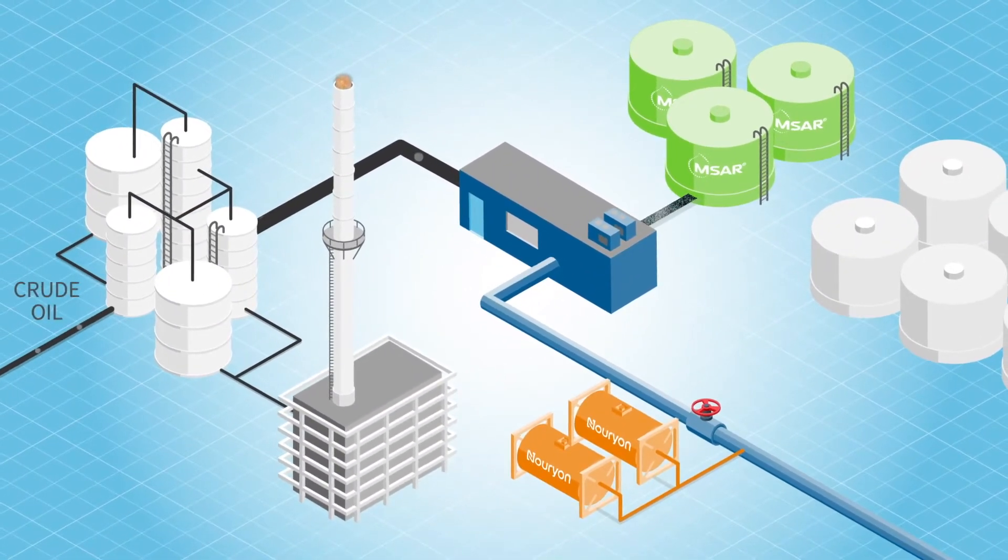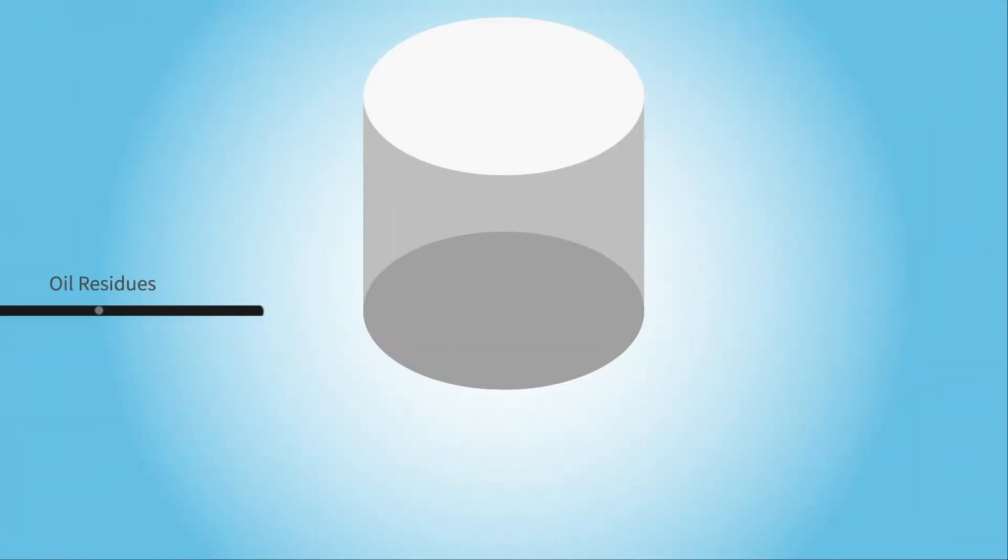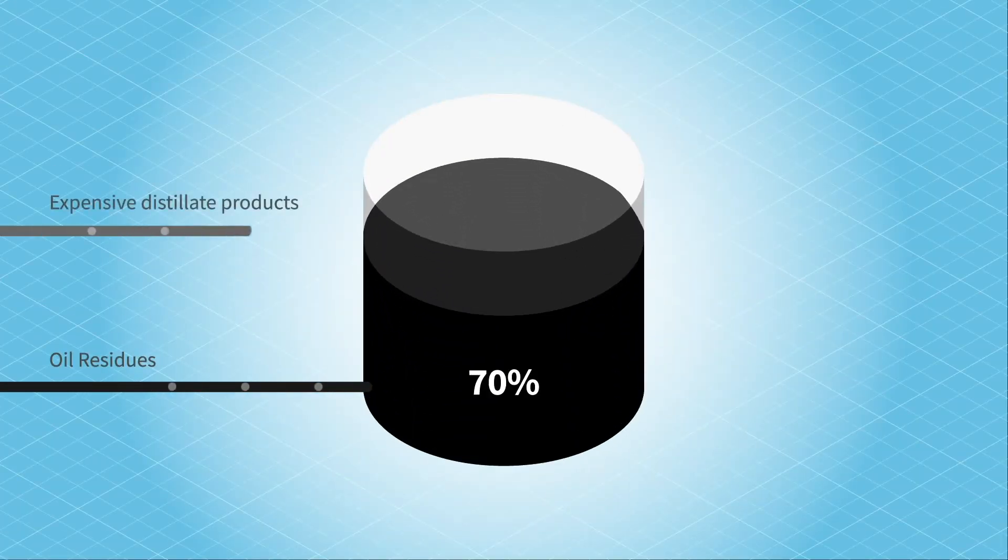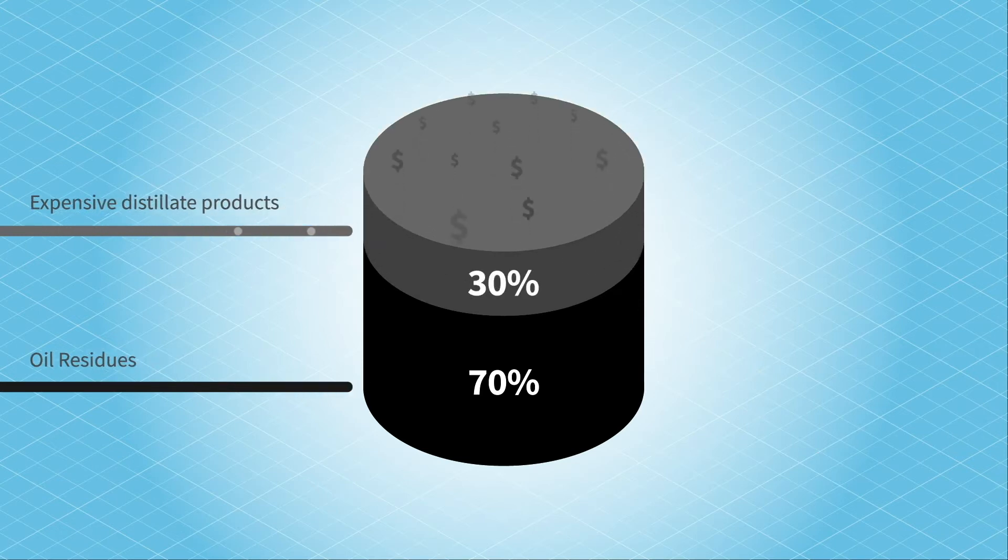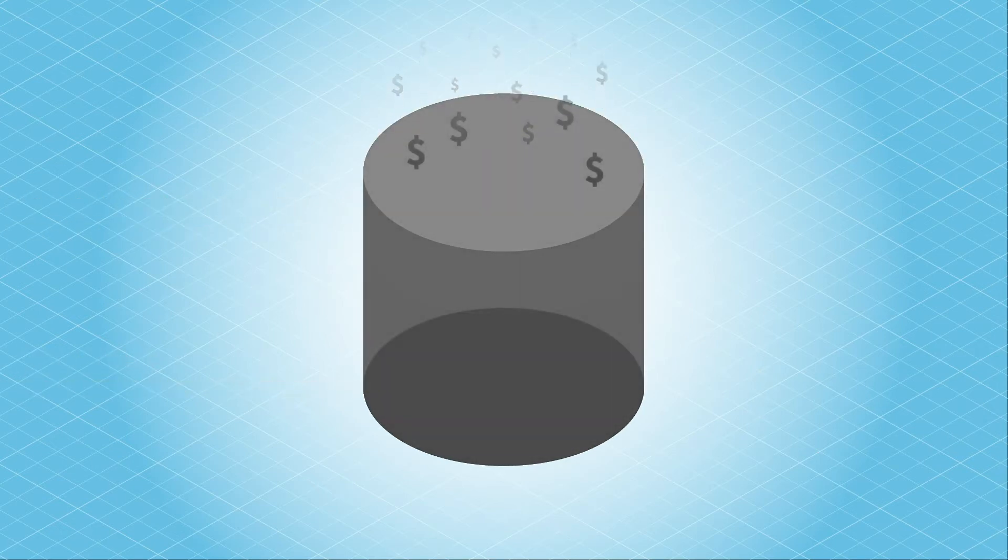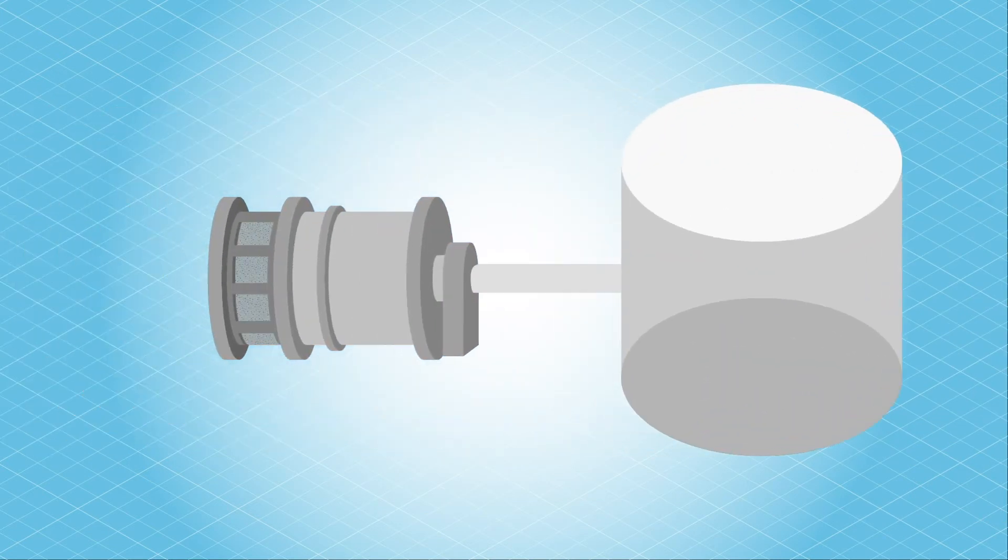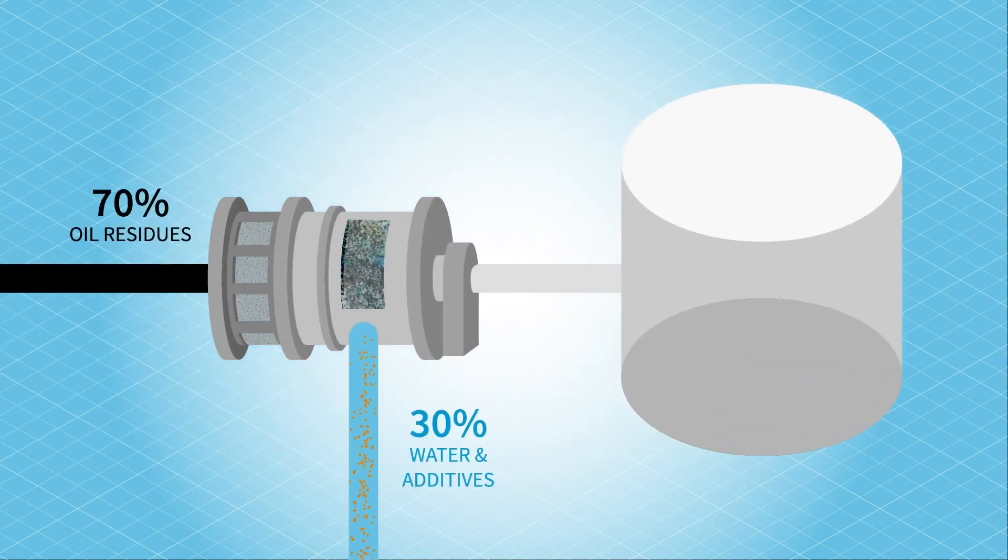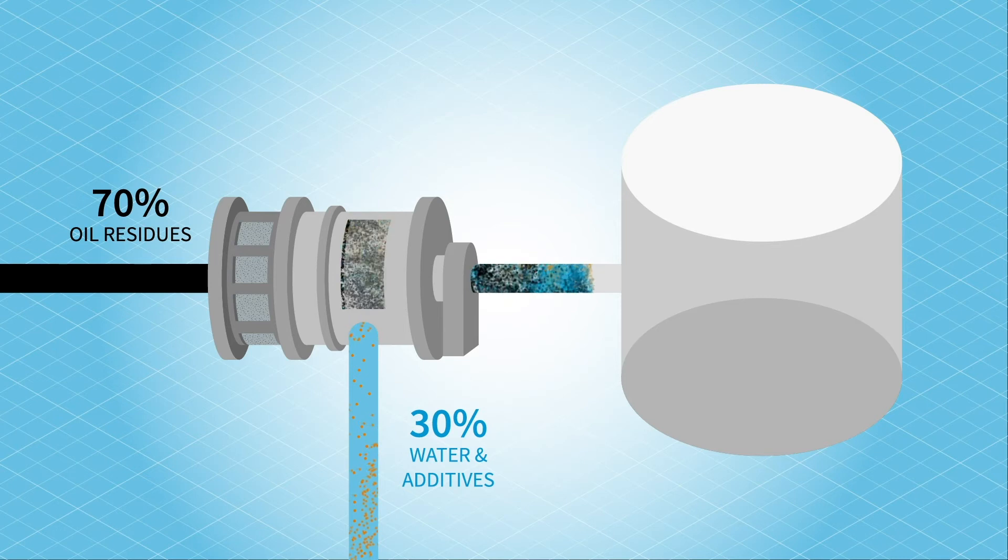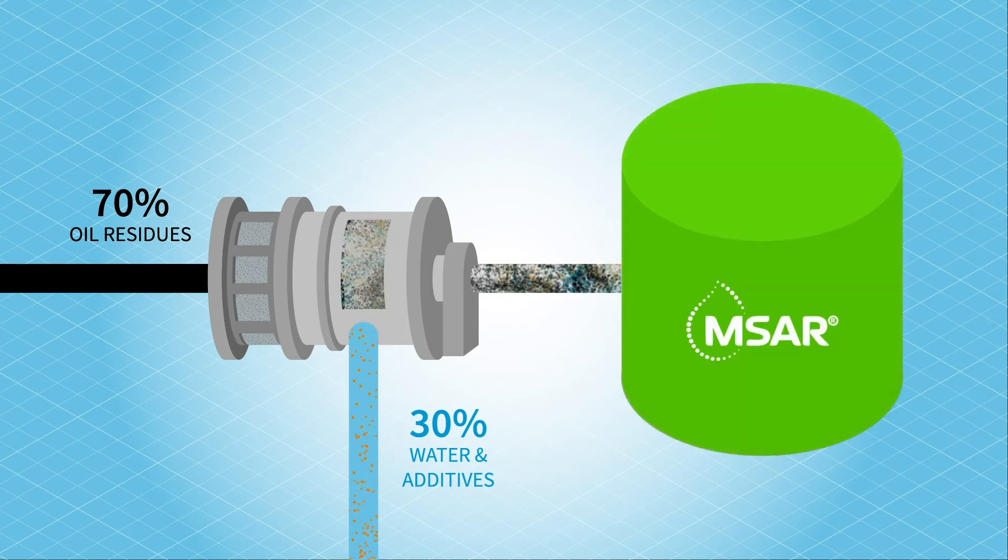Fuel oil is normally made by blending the tar-like oil residues with distillates such as diesel and similar expensive distillate products, so it will flow. This results in a significant loss of revenue for refiners. But by using water and additives as a diluent, Emsar allows refiners to sell all of their distillate products at a premium, creating significant value for the refiner.